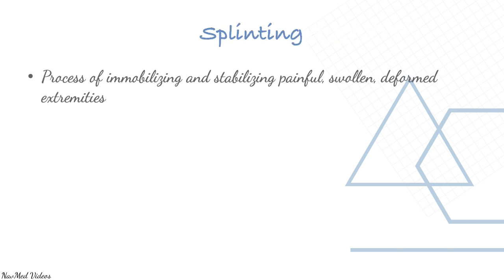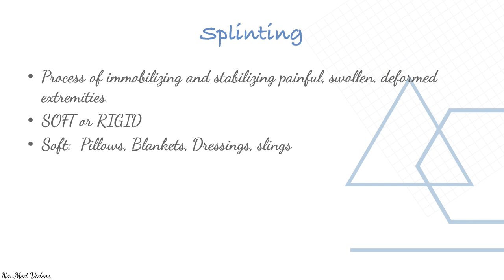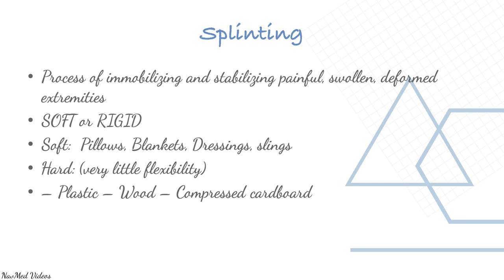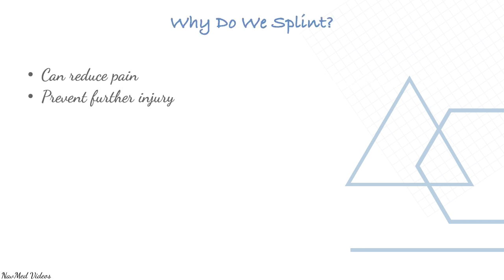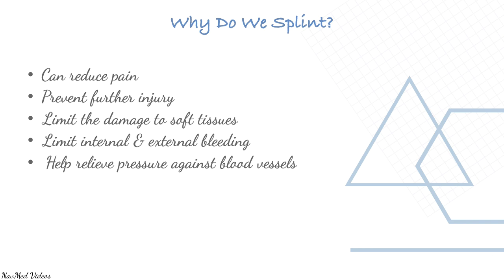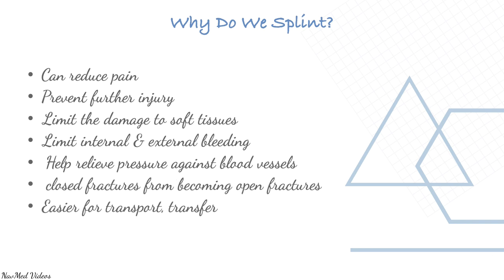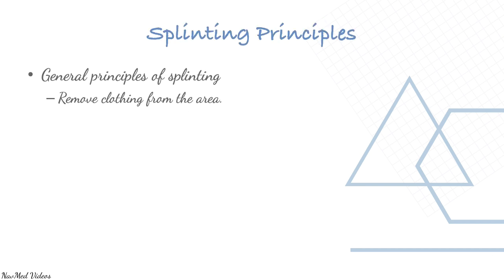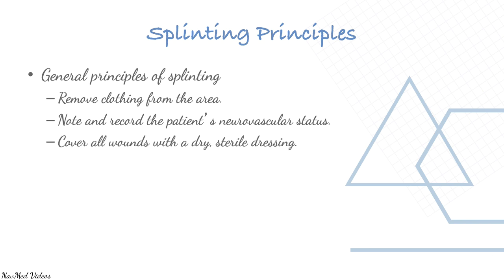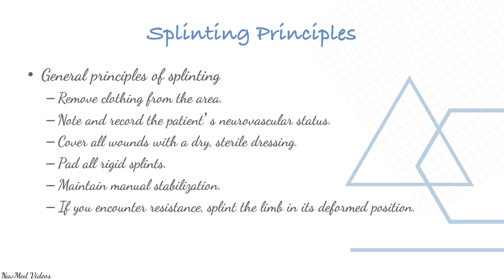Splinting is the process of immobilizing and stabilizing painful, swollen, or deformed extremities. Soft splints include pillows, blankets, dressings, or slings; hard splints can be plastic, wood, or compressed cardboard. Reasons to splint: reduce pain, prevent further injury, limit soft tissue damage and bleeding, relieve pressure on blood vessels, and keep closed fractures from becoming open. Principles: remove clothing from the area, record neurovascular status, cover wounds with dry sterile dressings, pad rigid splints, maintain manual stabilization, and if resistance is encountered, splint the limb in its deformed position.